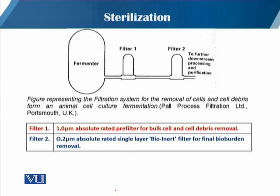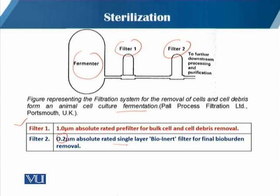In the other configuration shown, there is a fermenter, and filter one and filter two represent the filtration for removal of cells and cell debris from animal cell culture fermentation. In this case, the first filter has a pore size of 1 micron — rated as a pre-filter for bulk cell and cell debris removal. The second filter has a pore size of 0.2 microns — a single-layer bio-inert filter for final bio-burden removal. So a series of filters is used for proper sterilization.